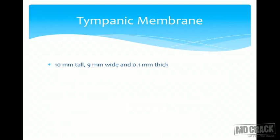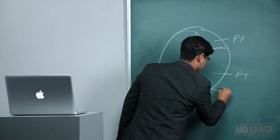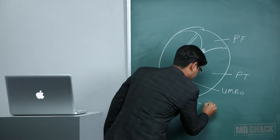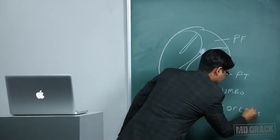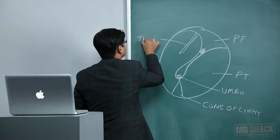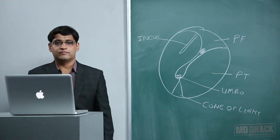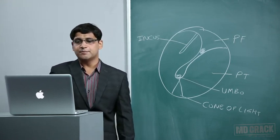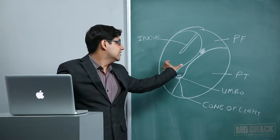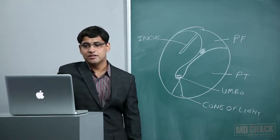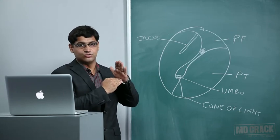Moving on to the tympanic membrane: its dimensions are 10 mm tall, 9 mm wide, and 0.1 mm thick. It is not at 90 degrees to the floor of the external auditory canal but is positioned at around 55 degrees to the floor of the canal.